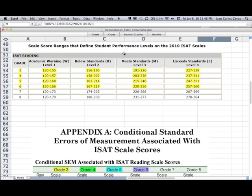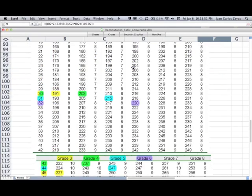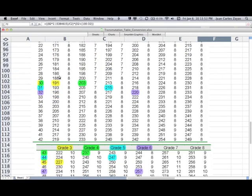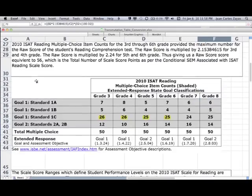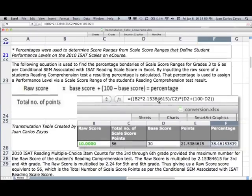The scale score ranges which define student performance levels on the 2010 ISAT scale for reading are converted to percentages by finding the corresponding raw score from the conditional SEM associated with ISAT reading scale score table. That raw score dividend is then divided by 56 divisor, which is the total number of raw score of the conditional SEM associated with ISAT reading scale score table. The quotient is then multiplied by the base score plus the difference of 100 minus the base score.